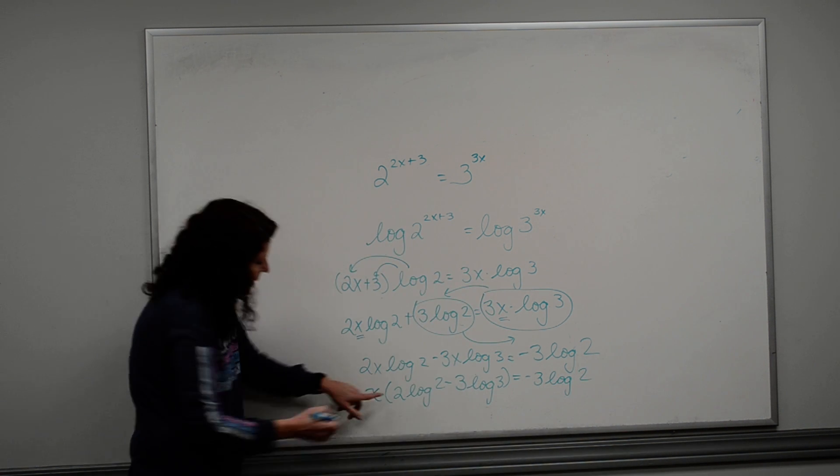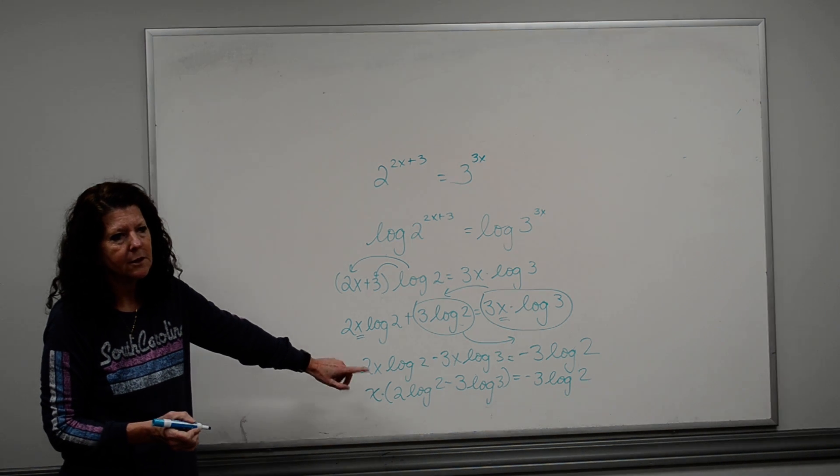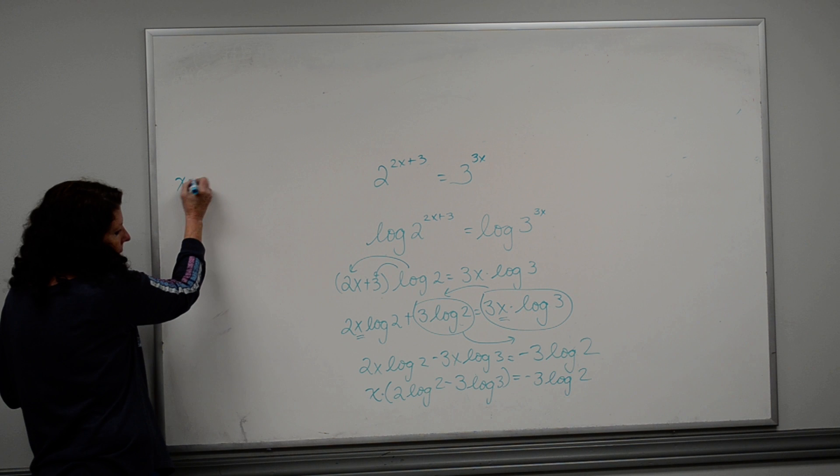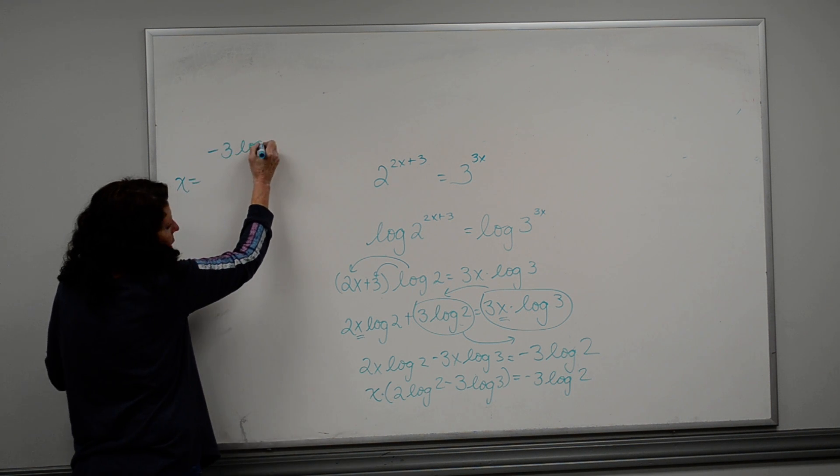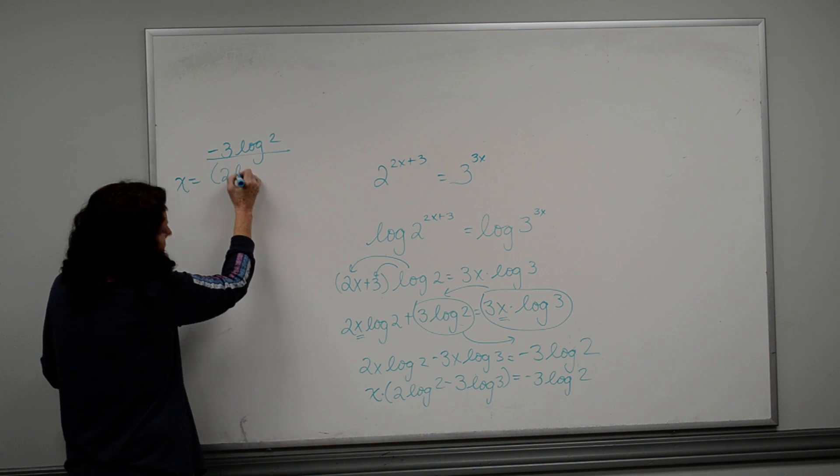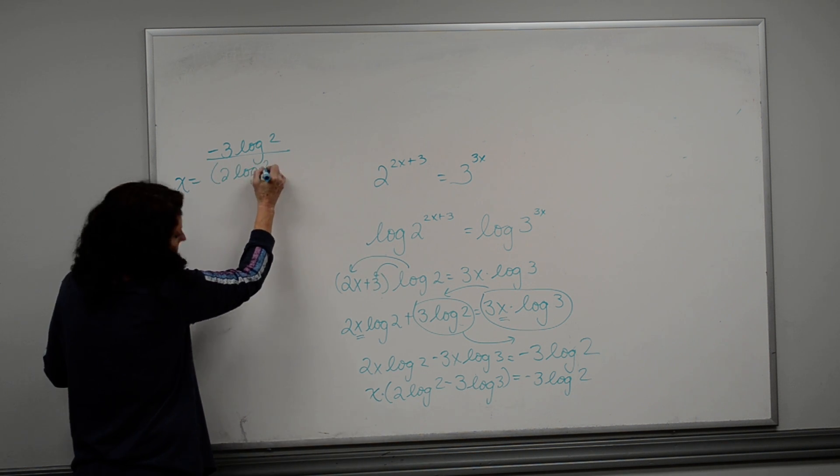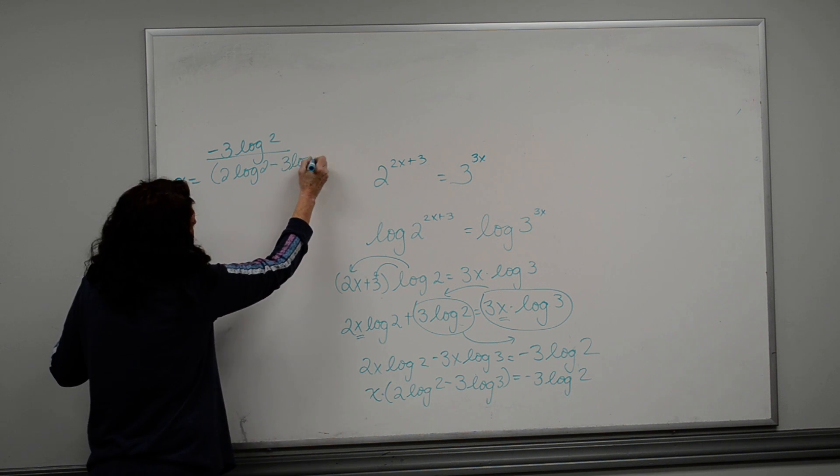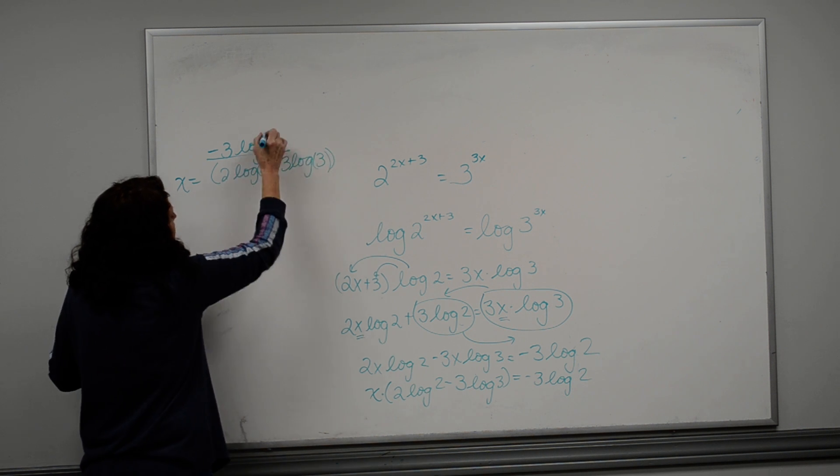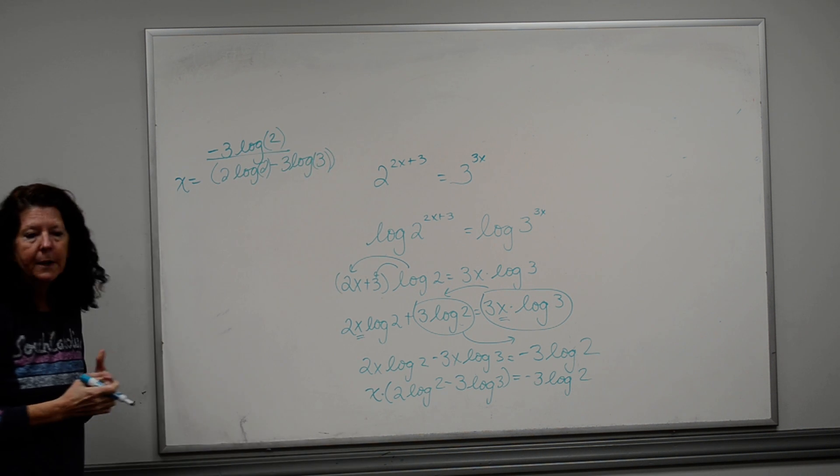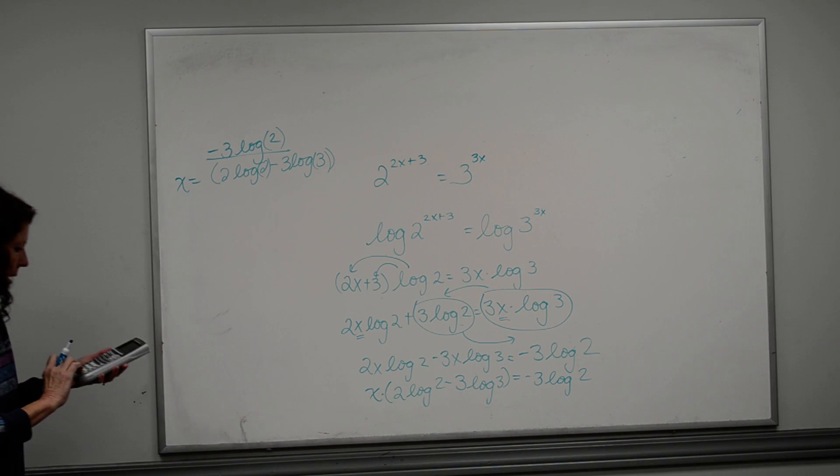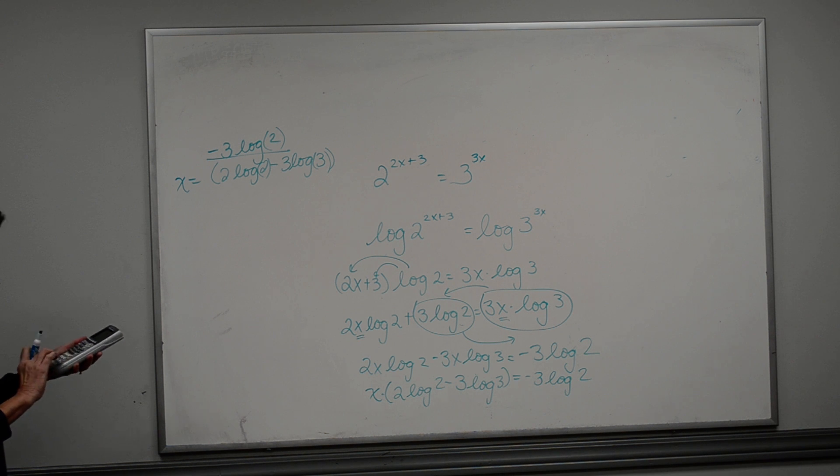Now I'm just doing algebra because this is multiplied by the x, so to solve for the x, I've got to divide. So x is going to equal negative 3 times the log of 2 divided by 2 times the log of 2 minus 3 times the log of 3. Just make sure you're careful with your parentheses. Maybe you should just be able to put that in your calculator and get an answer for it. Negative 3 times the log of 2, so let me get the log of 2.